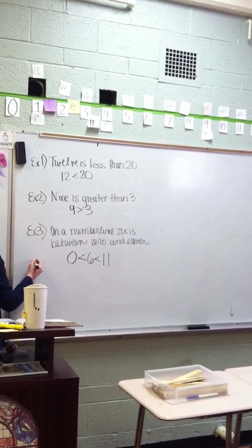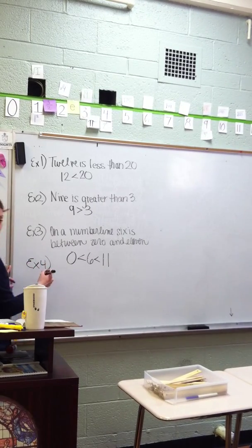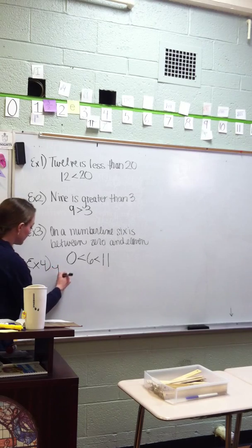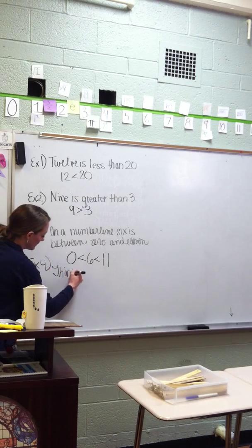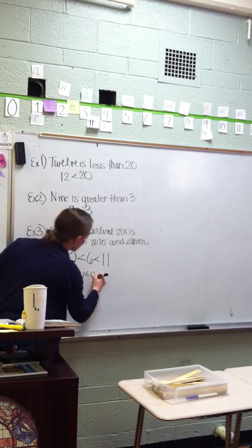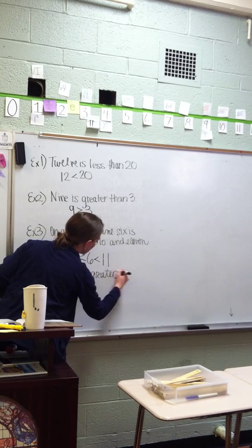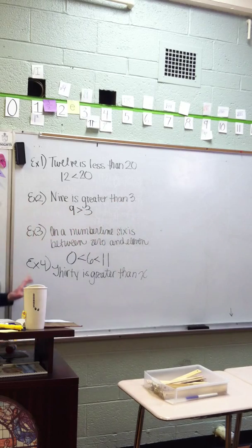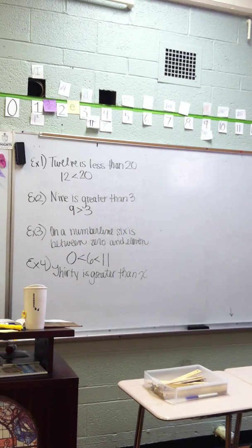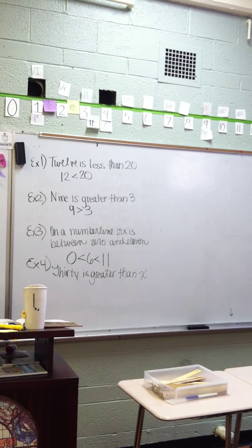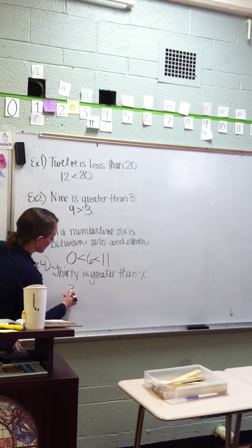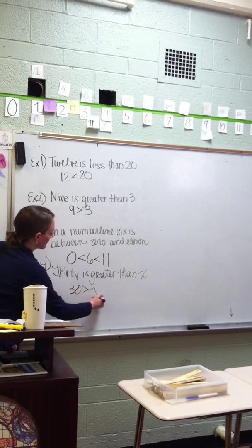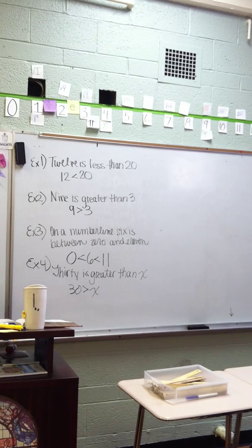Zero less than or equal to six? Less than or greater than six? Less than. So this says, and then six is in what relationship to eleven? Less than. This says that six is in between zero and eleven. That's what this statement says mathematically. Alright. Example four. Last one. Thirty is greater than X. Mike. Thirty greater than X. Yeah. Thirty greater than X.